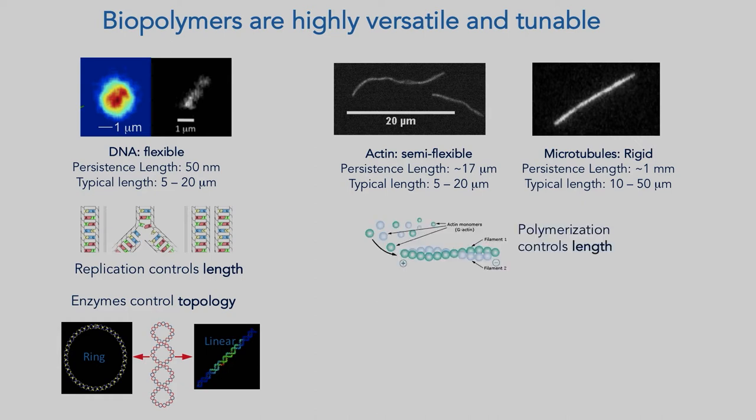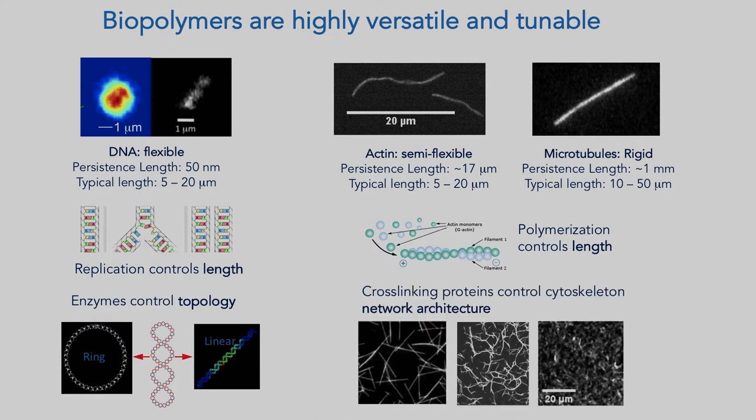Actin and microtubules comprise the cytoskeleton of our cells. Actin is semi-flexible — the persistence length is about the size of its length, kind of like a garden hose. Microtubules are really rigid — their persistence length is a millimeter, while our cells are on the order of 100 microns. You can control their lengths by polymerization conditions, and you can also introduce cross-linkers into networks of actin and microtubules to create different rigidities and properties.